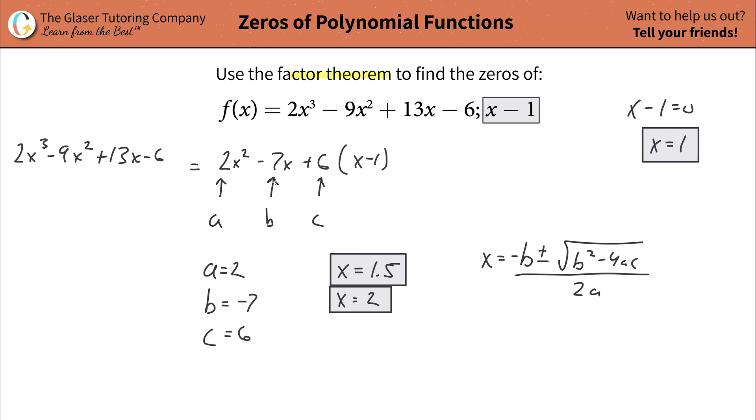So what are the zeros of this function? Well, the zeros are x = 1, as we saw, 1.5 or 3 halves, and 2. These are the zeros. Thanks for tuning in, ladies and gentlemen. I really do appreciate it. Hopefully that helps. And I'd love to help you with more, so check out more videos. We'll see you soon. Bye.